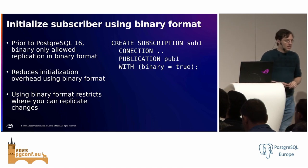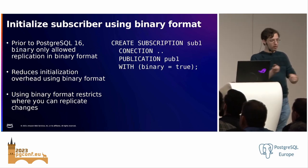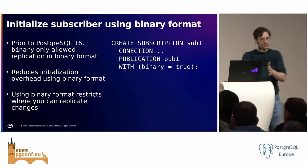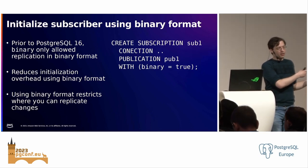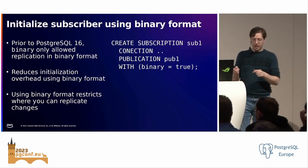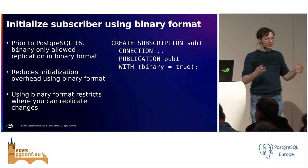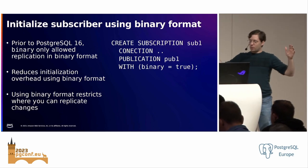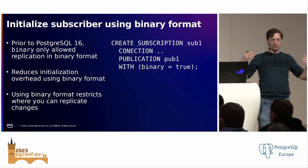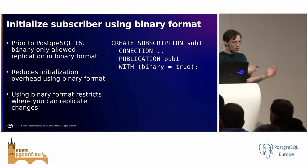Another enhancement is the ability to accelerate initializing a subscriber using Postgres binary format, which is faster than text format. Postgres has two formats: text is a logical representation, binary is what it looks like on disk. Sending in binary avoids the conversion overhead of binary-to-text-to-binary. There is a limited scope — effectively Postgres instances of the same major version, with the same underlying file system and operating system — but if your environment supports it, this speeds up initialization, particularly for very large tables.